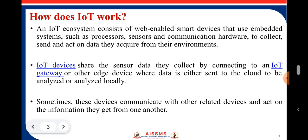Now, how does this particular IoT work? An IoT ecosystem consists of web-enabled smart devices that use embedded systems such as processors, sensors, and communication hardware to collect and act on data they acquire from their environments. Whatever data we collect with the help of sensors needs to be processed and then transferred to the application or to the actuators. IoT devices share the sensor data they collect by connecting to an IoT gateway or other edge device, where data is either sent to the cloud to be analyzed or analyzed locally. Sometimes devices communicate with other related devices and act on the information they get from one another.